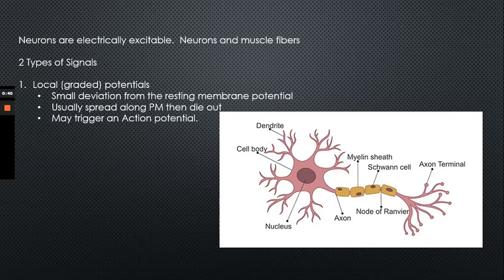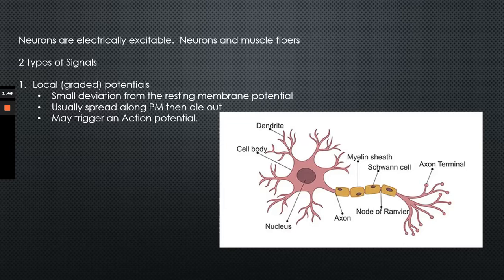There are two types of signals: one is called a local or graded potential — the older term is 'graded,' so you'll hear both terms used. A couple characteristics of local potentials: you get a small deviation from the resting membrane potential along the plasma membrane. It starts at resting membrane potential, then a small part of the plasma membrane deviates, spreads along it, and then dies out. Local potentials can seem like false starts.